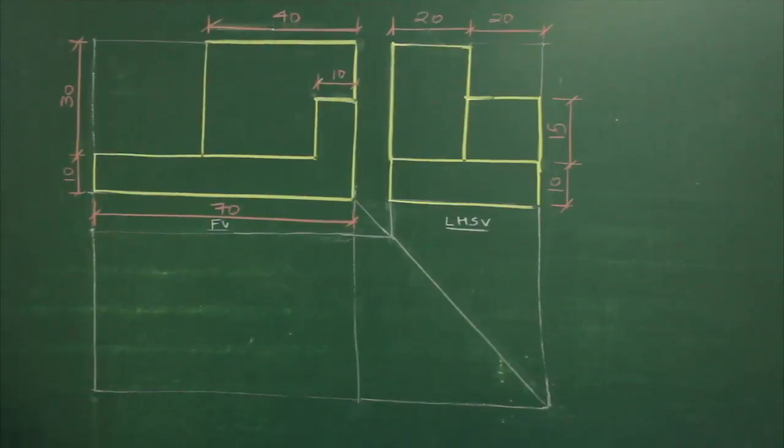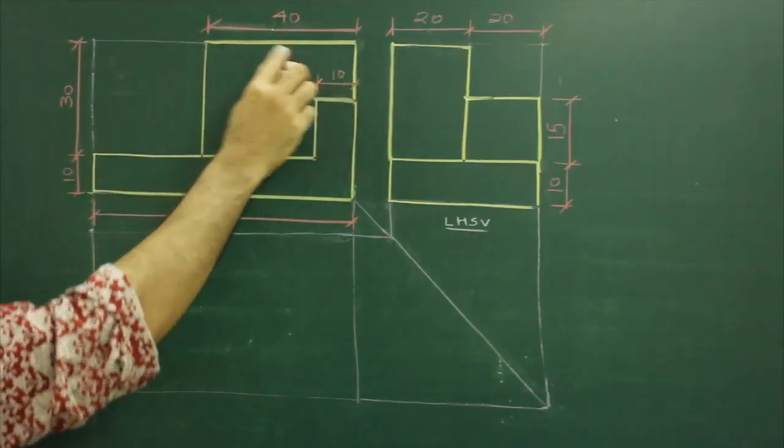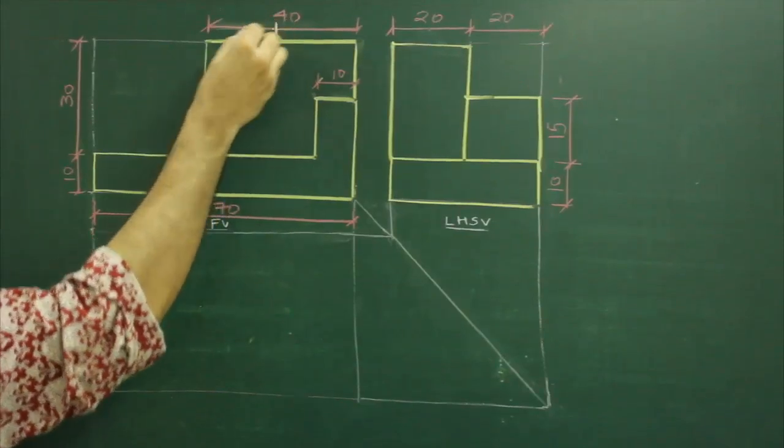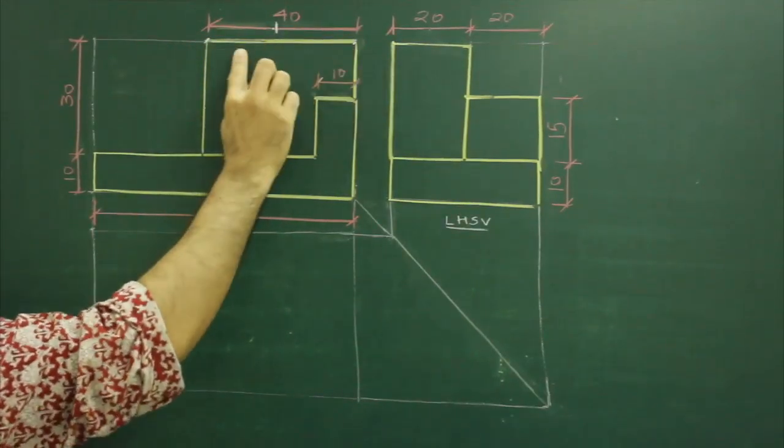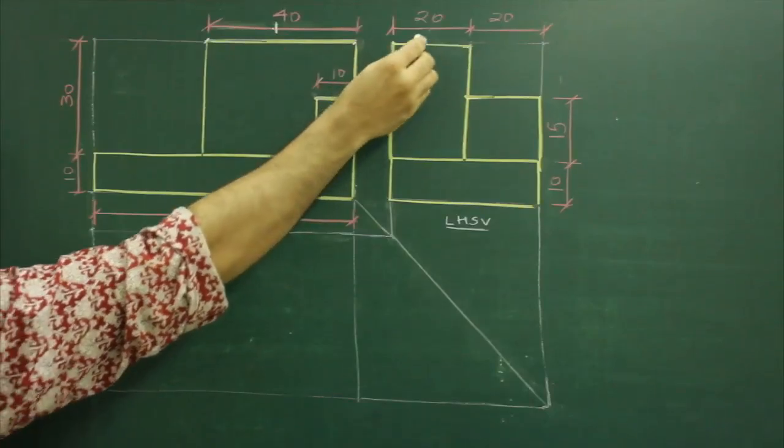When you see from the top, we will see this surface first, so I will mark this as one surface from here to here. This is surface number one. Now corresponding to this surface, we have this surface.